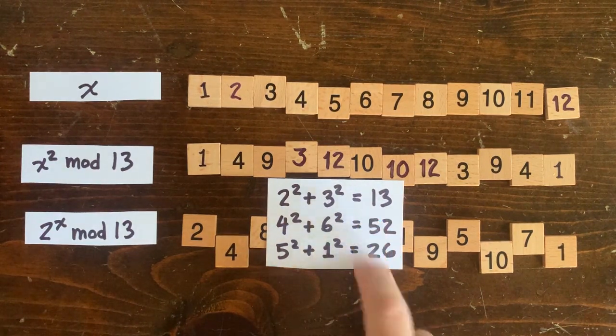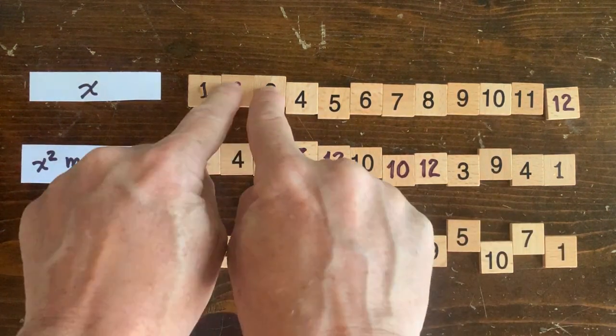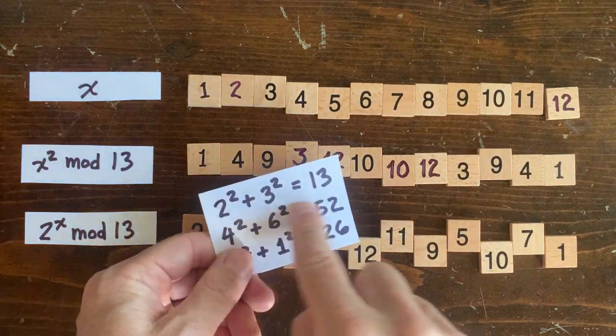So we need to show that when we pair up the squares down here, one pair is going to involve very small x's, so that we can add their squares to 13, or whatever prime we're working with.